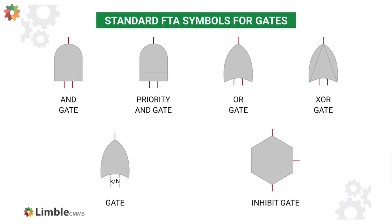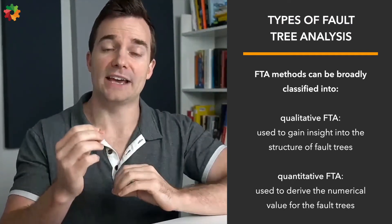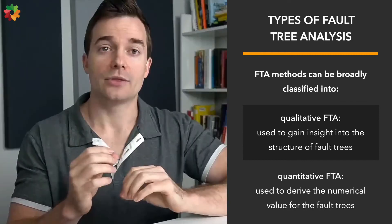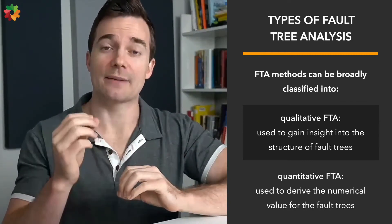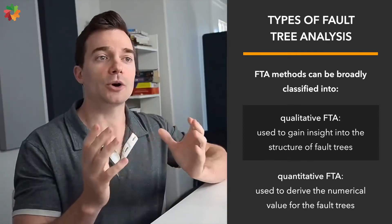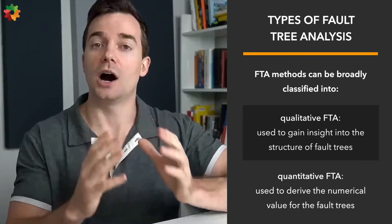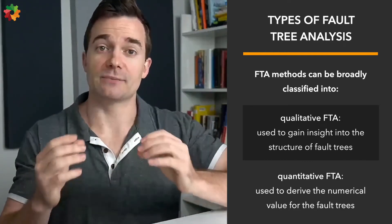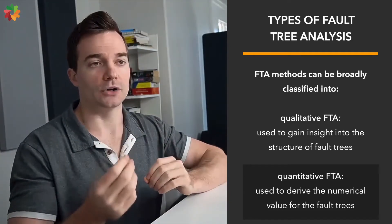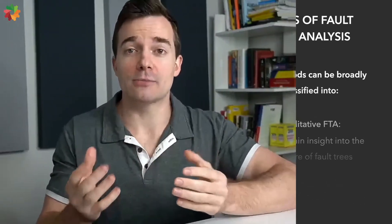So what are the types of fault tree analysis? FTA methods can be broadly classified into qualitative FTA and quantitative FTA. Qualitative FTA is used to gain insight into the structure of fault trees to analyze the vulnerabilities of a system. There are different ways to conduct qualitative FTA, like minimal cut sets (MCS), minimal pass sets (MPS), and common cause failures (CCF). MCS is used to identify the vulnerabilities of a system, MPS is used to determine its robustness, and CCF is used to figure out if multiple failures can be caused by one single element. Quantitative FTA is used to derive relevant numerical values for the fault tree — assigning a numerical probability of failure helps gauge a better understanding of the risks faced by the system, and teams can then determine the priority of fixing various cut sets.